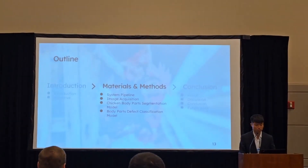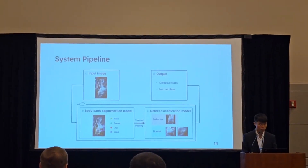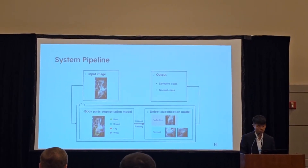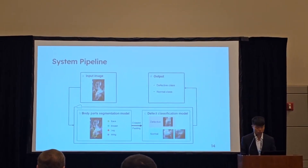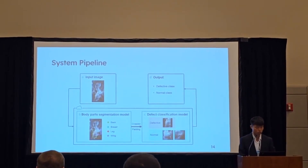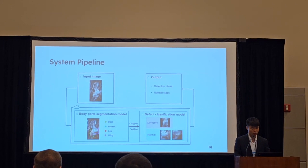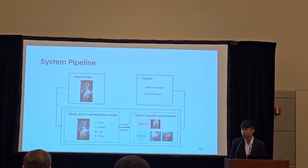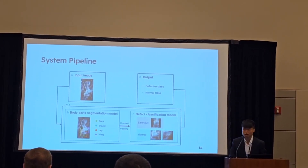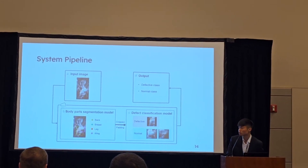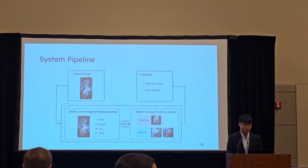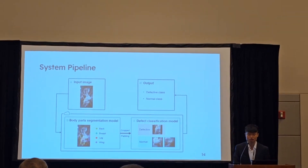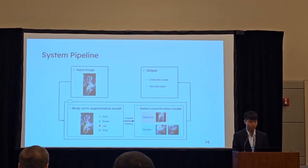This is the material and method — specifically the system pipeline. First, the image will be captured through the image acquisition module, and then the image is input to a two-stage deep learning model. The first model detects the body parts, and the second model classifies the body parts as either the defective class or the normal class.